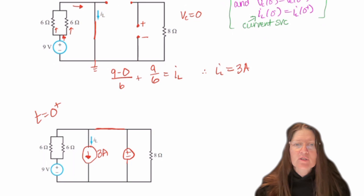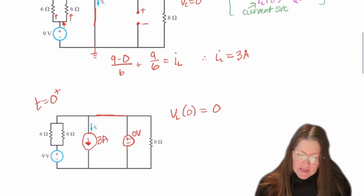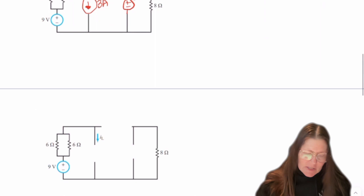For right after zero plus, it will be closed. And this will be zero volts. And my VL of zero then will still be zero, which because it's in parallel with that zero volt source. And then IL of zero will be the 3 amps.